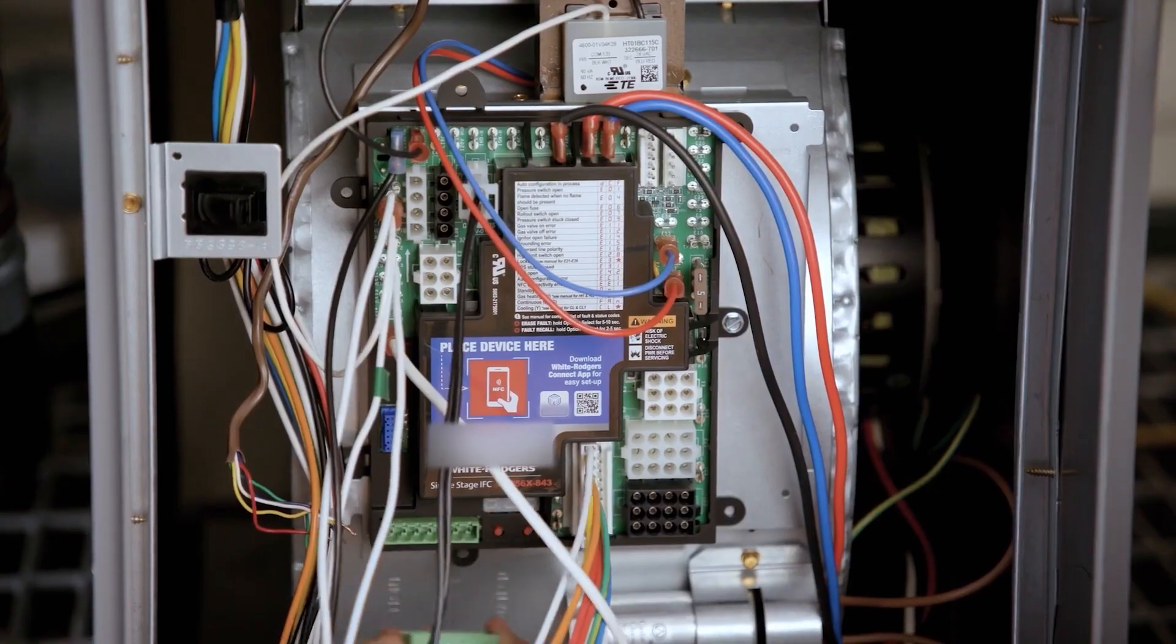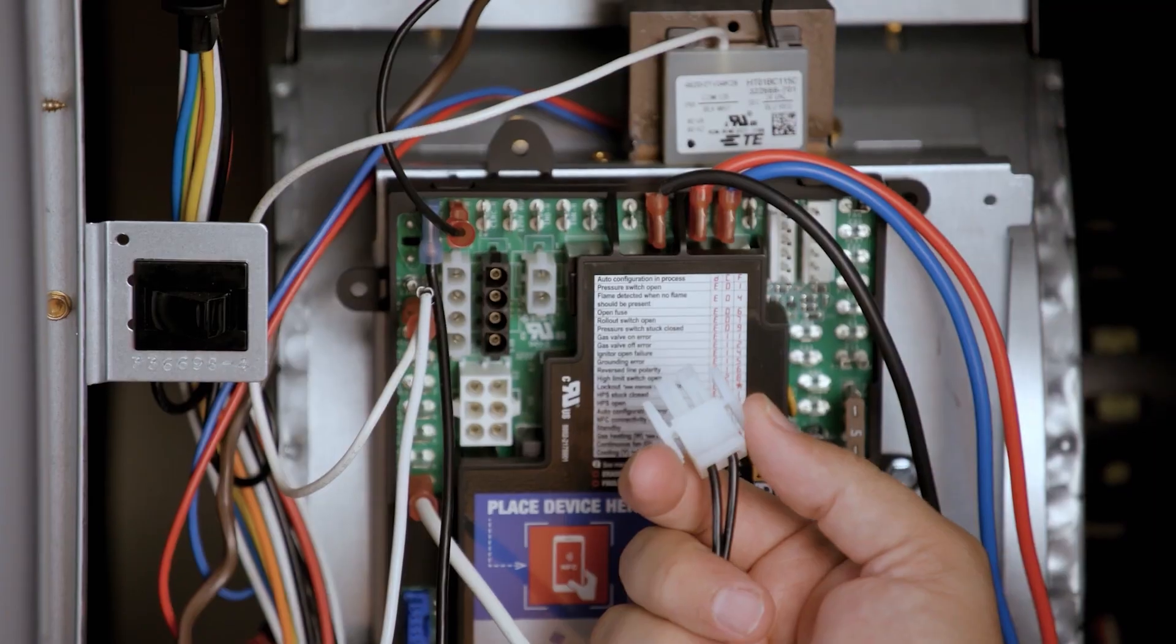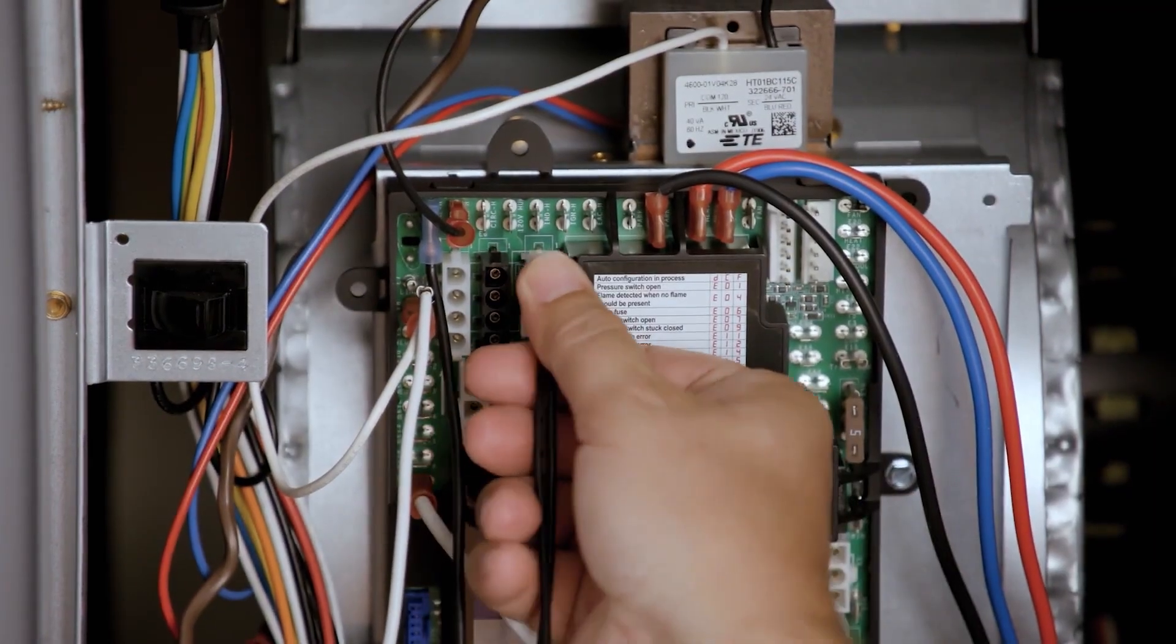Connect the wires to the thermostat connector block. Now reconnect the rest of the wires, including the ground wire.